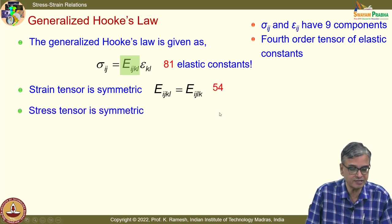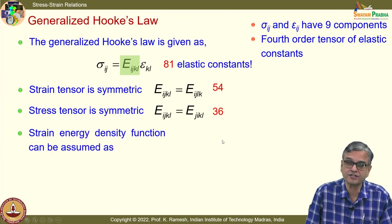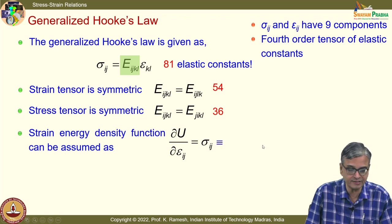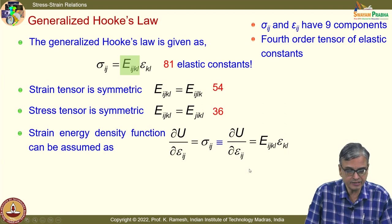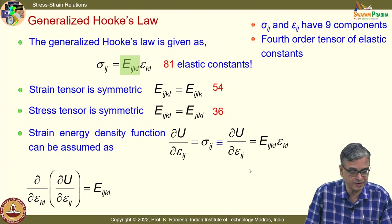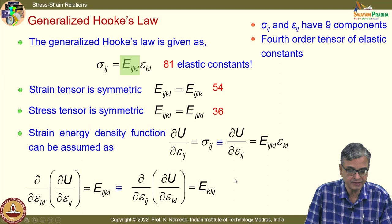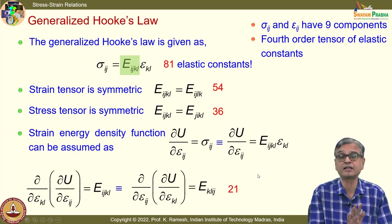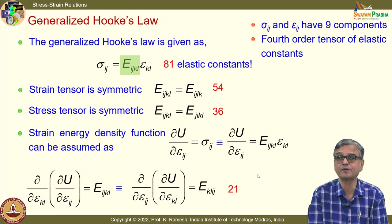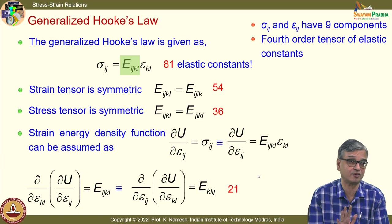If you look at the strain energy density function and differentiate with respect to ε_ij to get σ_ij — another statement of Castigliano's theorem — the order of differentiation does not matter, so E_ijkl = E_klij, reducing to 21 elastic constants. So if you have an anisotropic material, you may require 21 elastic constants. For isotropic material, you need just two.